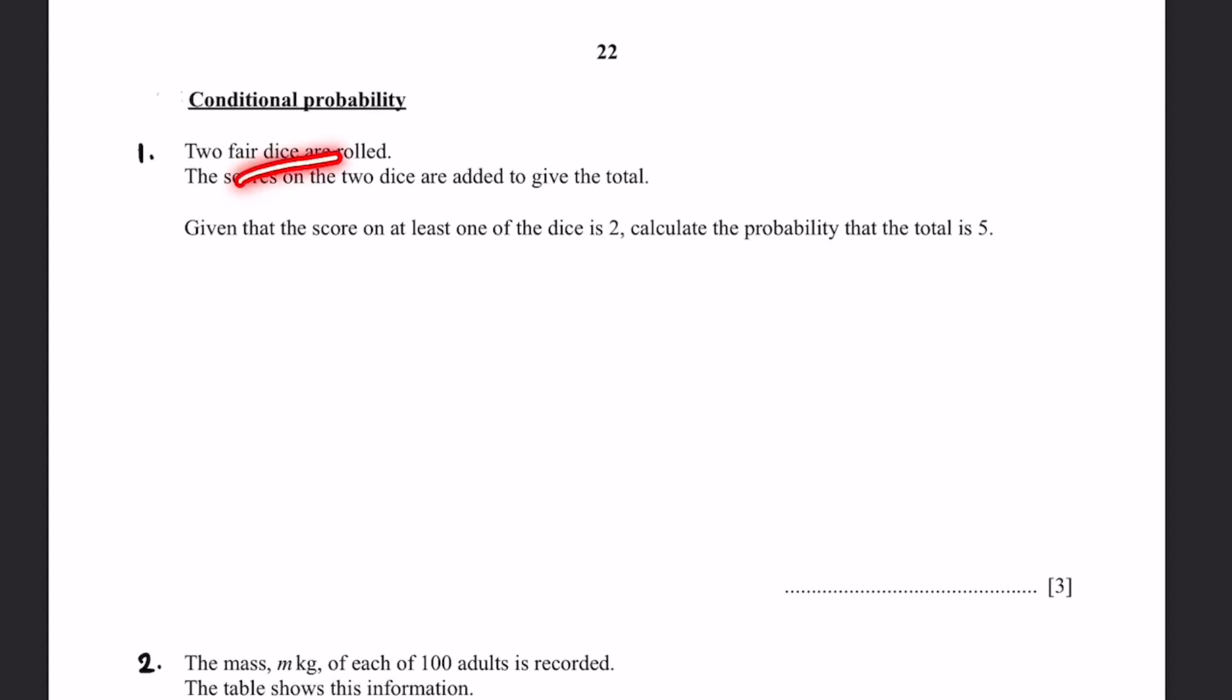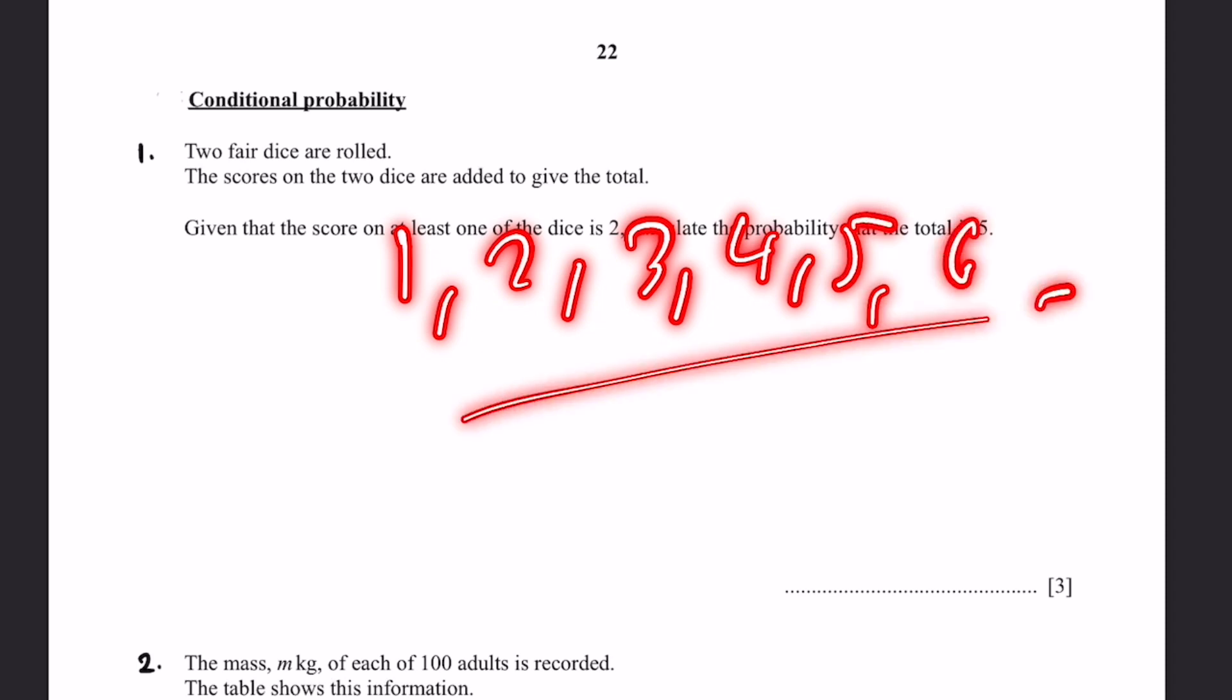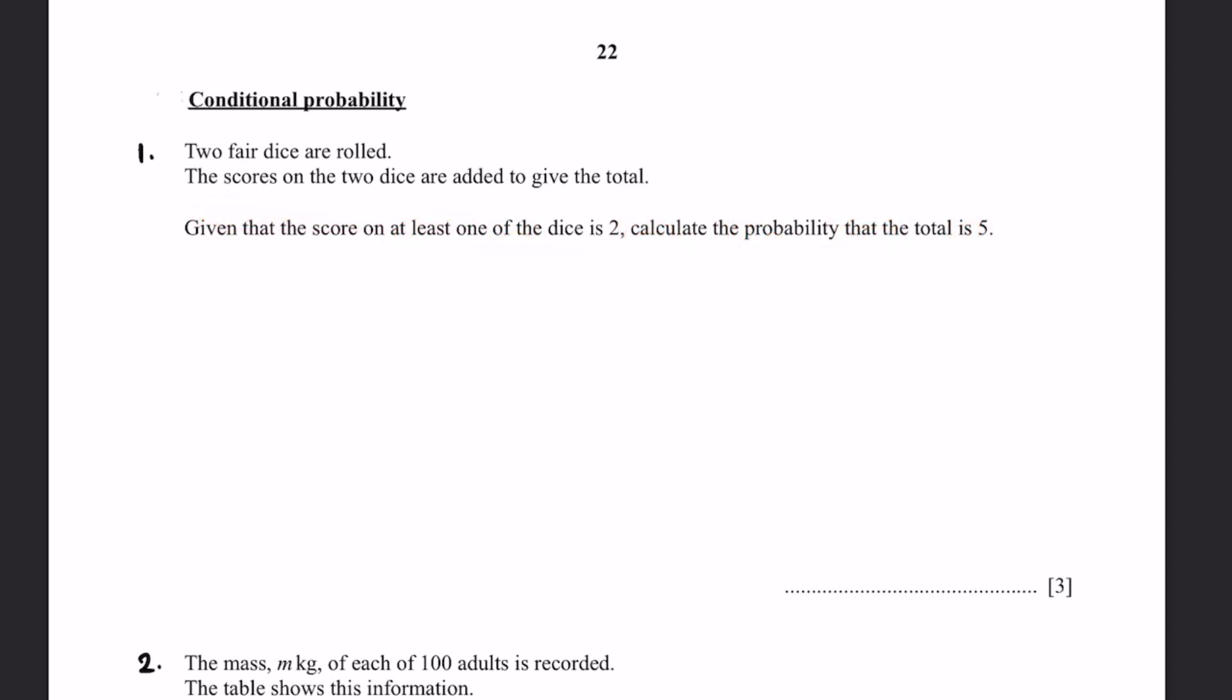So in this case, the two fair dice means two dice with number options from 1 to 6, which means 1, 2, 3, 4, 5, and 6. So the scores on the two dice are added to give the total. That is what we know. And one of the dice has to have a value of 2.